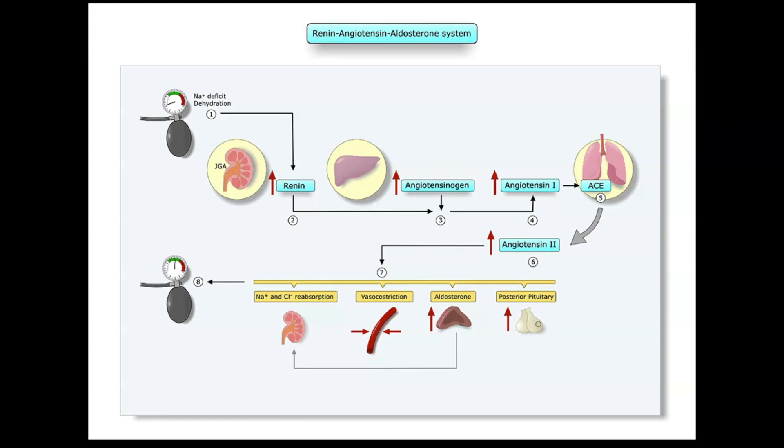If blood pressure starts getting too high, this process should turn off, but in some people it doesn't — which is why we give medications like angiotensin receptor blockers or ACE inhibitors. These work by preventing angiotensin 1 from converting to angiotensin 2, so we don't get the vasoconstriction and sodium and water reabsorption occurring in the kidney, thereby helping to lower blood pressure.